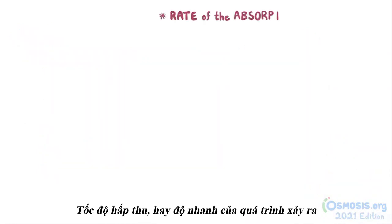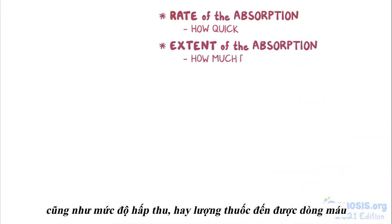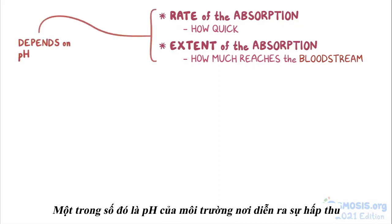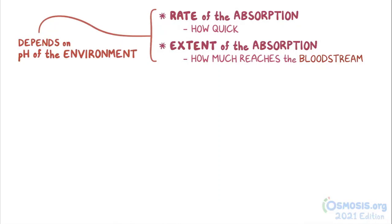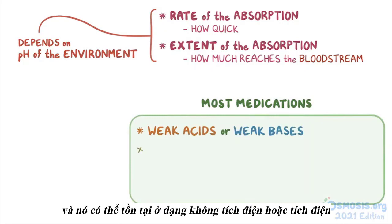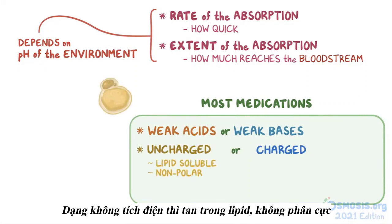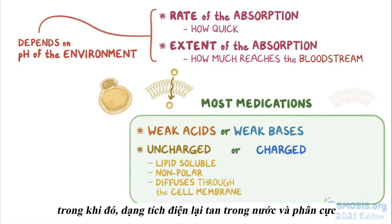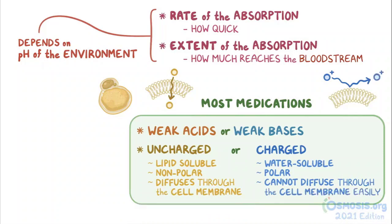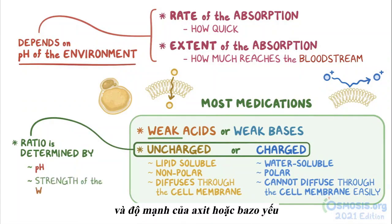The rate of absorption — or how quickly this process occurs — as well as the extent of absorption — or how much of that medication reaches the bloodstream — depend on several factors. One of them is the pH of the environment where absorption takes place. Most medications are either weak acids or weak bases and can exist in an uncharged or charged form. The uncharged form is the lipid-soluble, nonpolar one, which happily diffuses through the cell membrane, while the charged form is water-soluble and polar, and thus cannot diffuse through the cell membrane easily. The ratio between the two forms is determined by the pH of the environment and the strength of the weak acid or base.